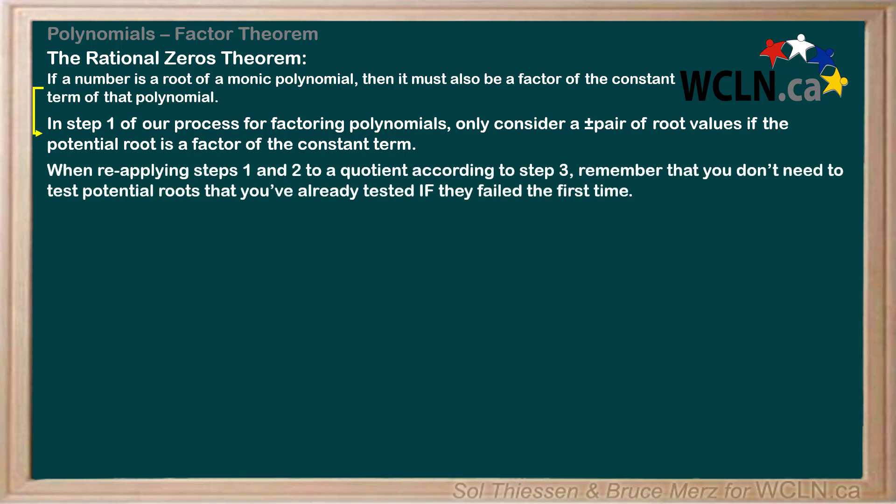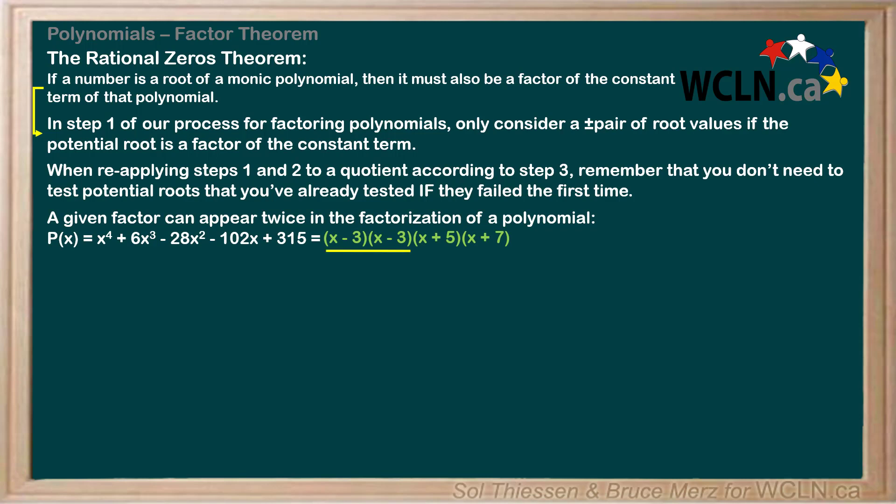The other thing I want you to take away from this video is that when reapplying steps 1 and 2 to a quotient according to step 3, remember that you don't need to test potential roots that you've already tested if they failed the first time. If they were successful the first time, make sure you test them again, because as you saw in this video, a given factor can appear twice in the factorization of a polynomial. That's all for this video, remember these points and you'll be A-OK.